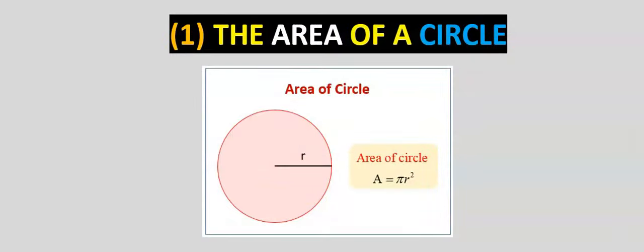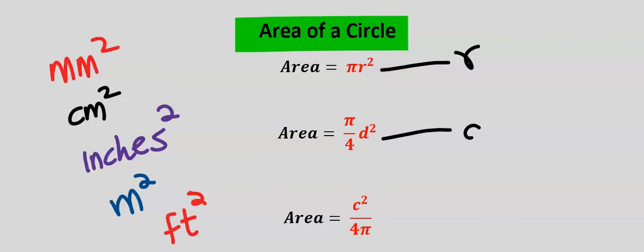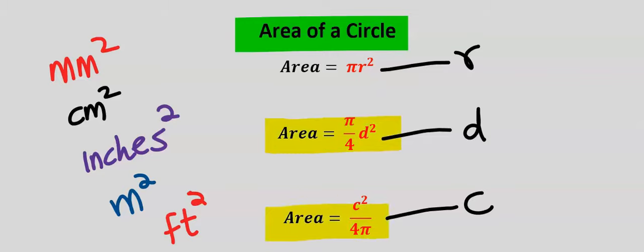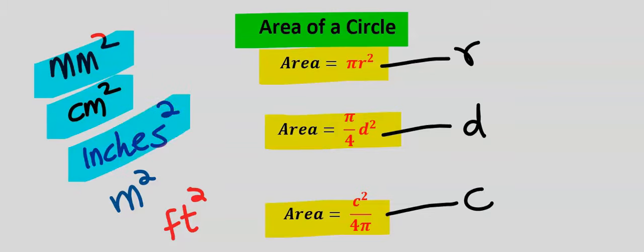Let's start with the area of a circle. Pi r squared is the most common known formula when finding the area of a circle, and this is when the radius is given. Other ways of finding the area of a circle are when the diameter is given and when the circumference is given — these two formulas are simply a modification of the first one. The units of area can be millimeters squared, centimeters squared, inches squared, meters squared, or feet squared, each depending on the unit of the radius, diameter, or circumference.